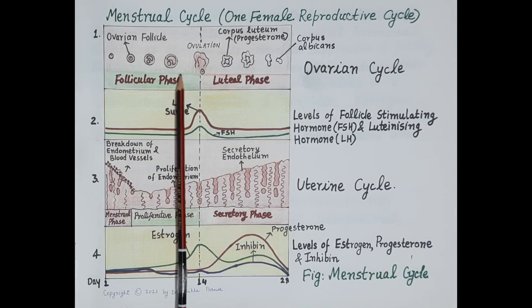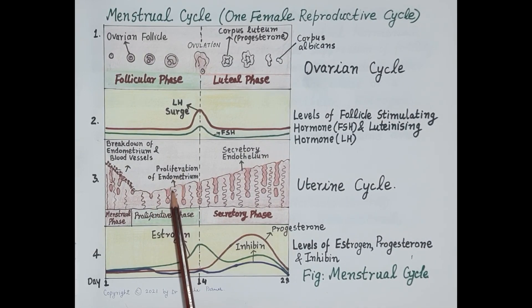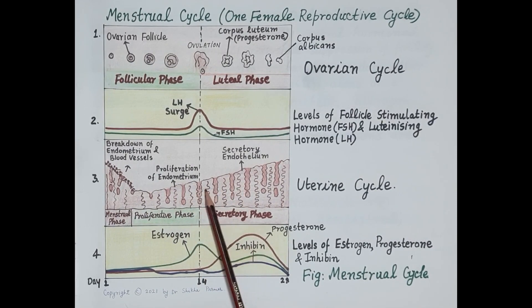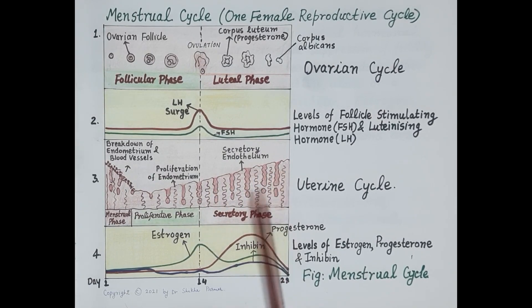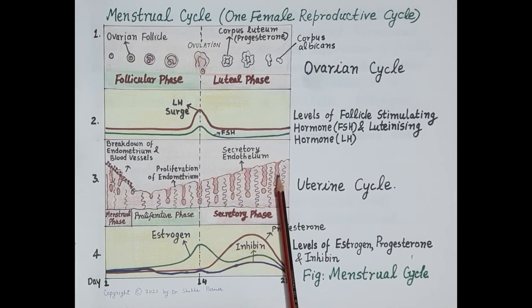As the Graafian follicle develops, it produces estrogen, which is responsible for the proliferation of the endometrium — the innermost lining of the uterus. Further, it is progesterone which makes this endometrium secretory by increasing the blood supply to it and making the endometrial glands secretory, so they increase their secretion. Thus progesterone maintains pregnancy and is also termed the hormone of pregnancy.